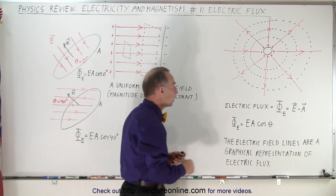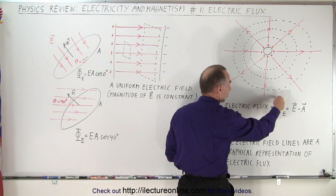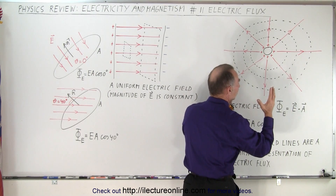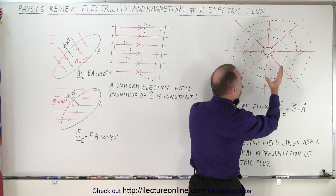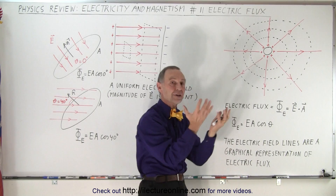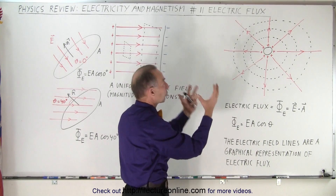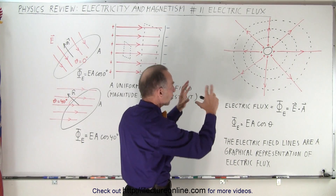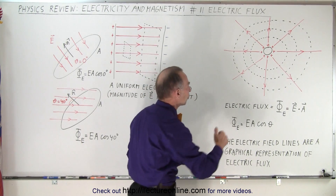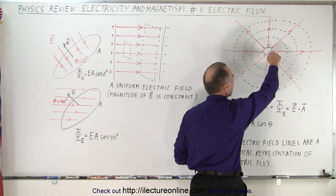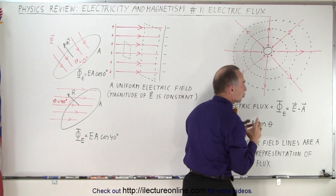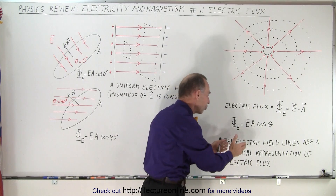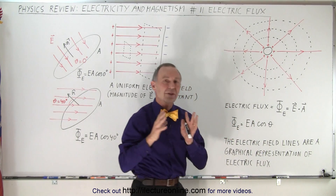By definition, the electric flux — this is the symbol right here — is simply the dot product between the strength of the electric field and the surface area of any one sphere you draw around the charge. It doesn't have to be a sphere; there are other geometric shapes, and we'll get into that in a moment. The lines we drew graphically representing the electric field can be thought of as the graphical representation of electric flux.